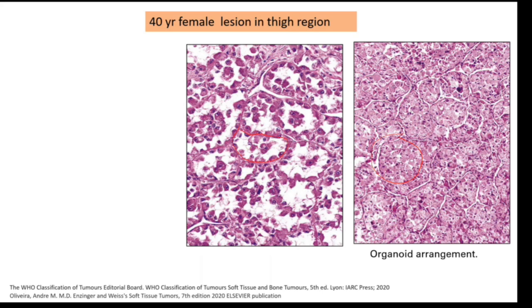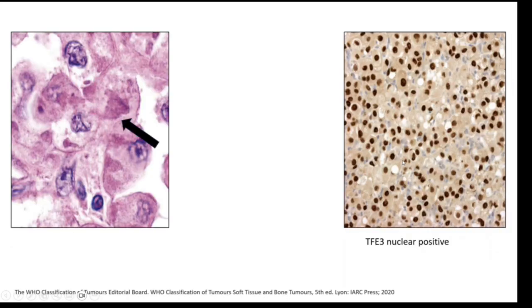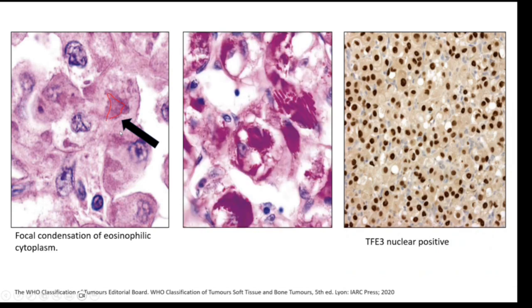This is called the alveolar pattern — also referred to as pseudo-alveolar pattern. The tumor cells are loosely arranged and discohesive in the center. There is also a vessel infiltrated by tumor cells, indicating vascular invasion. The tumor cells came positive for TFE3, and there is lots of eosinophilic material in the cytoplasm.